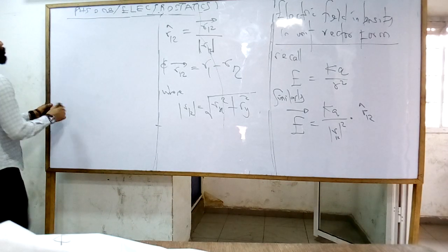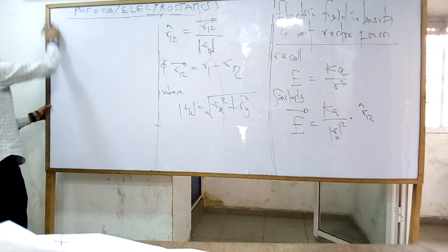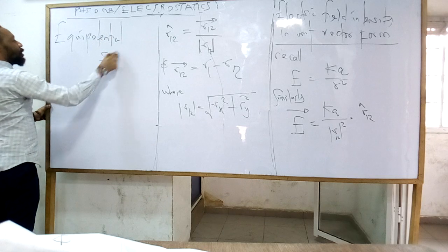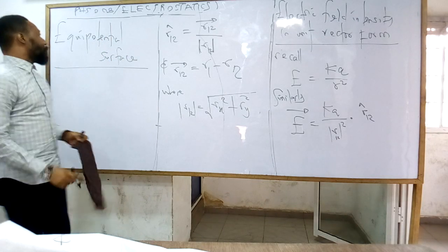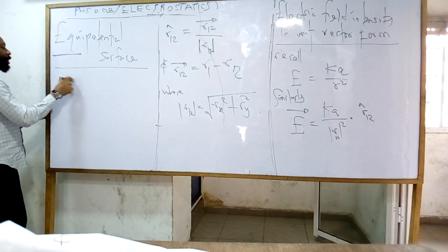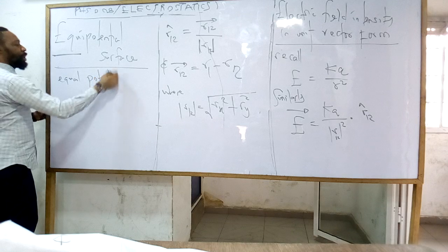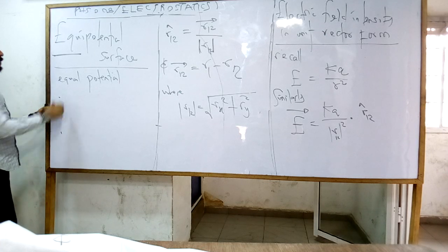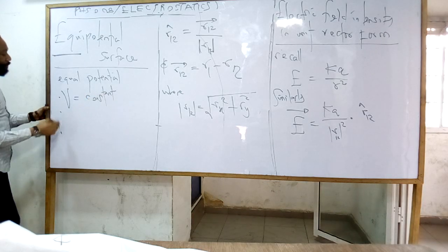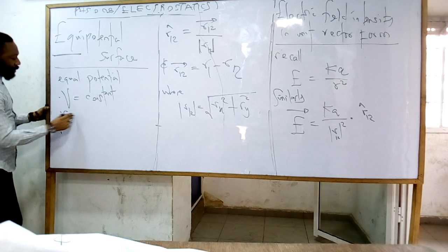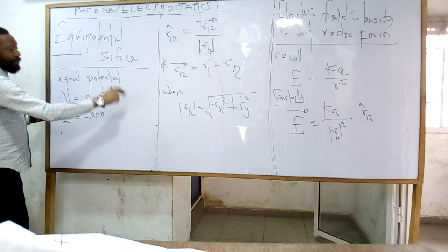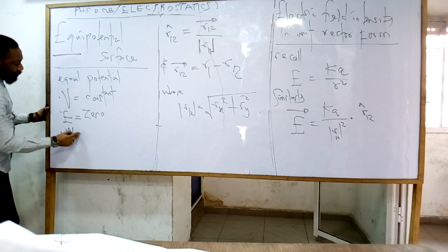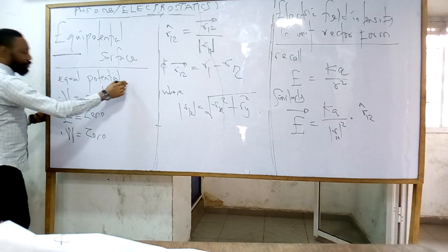I will also remind you of what we call equipotential surface. Any surface where the potential is the same throughout is an equipotential surface — the potential is constant. What are the features of an equipotential surface? V equals constant. Since V is constant, we expect E to be zero, because normally E equals delta V over delta r. Since V is constant and E is zero, we expect work done to be zero. These are the features of an equipotential surface.